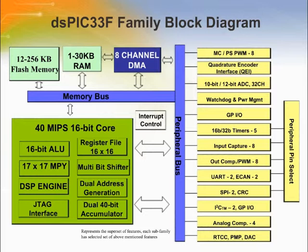Another member of the DSPIC family is the DSPIC33F. Nearly all peripherals of the DSPIC30F are present in this family. To improve throughput, the CPU speed has been increased to 40 MIPS and an 8-channel DMA has been added. As seen previously, adding a DMA greatly enhances peripheral handling by the CPU, thereby increasing its overall throughput.